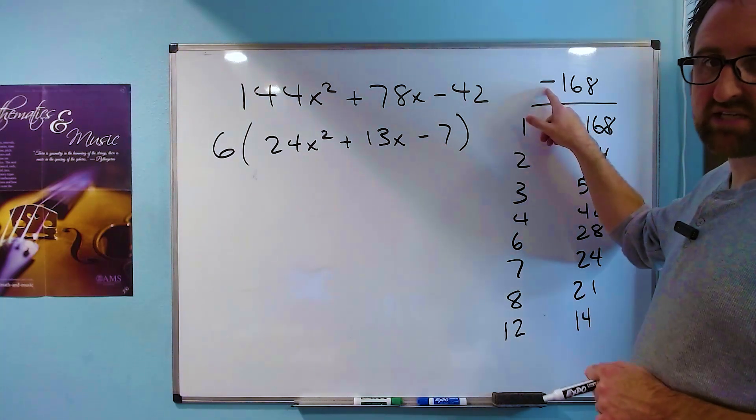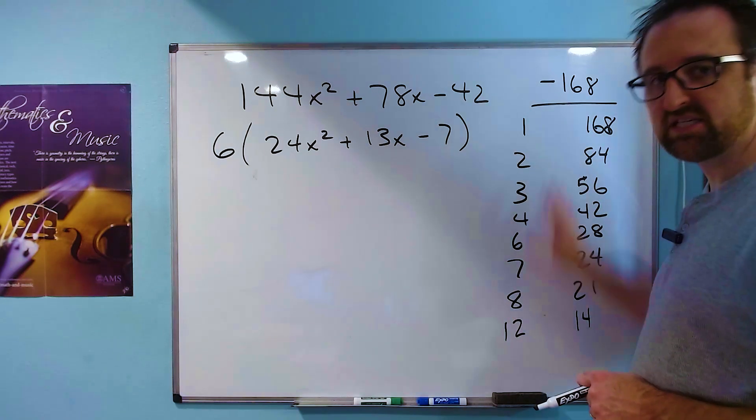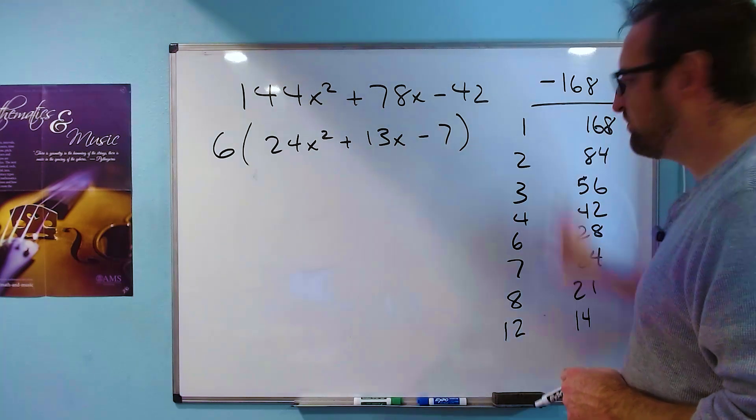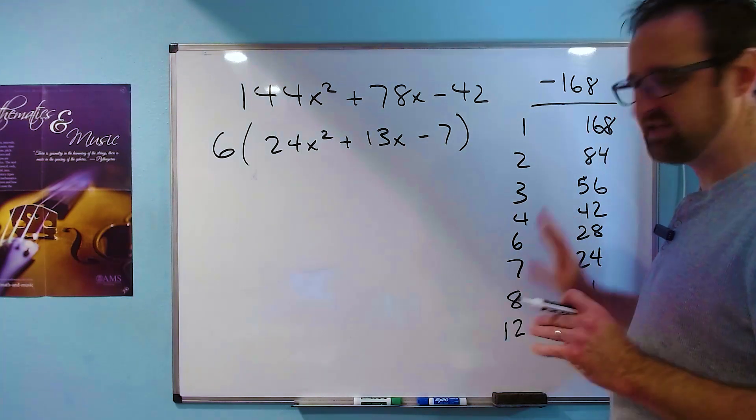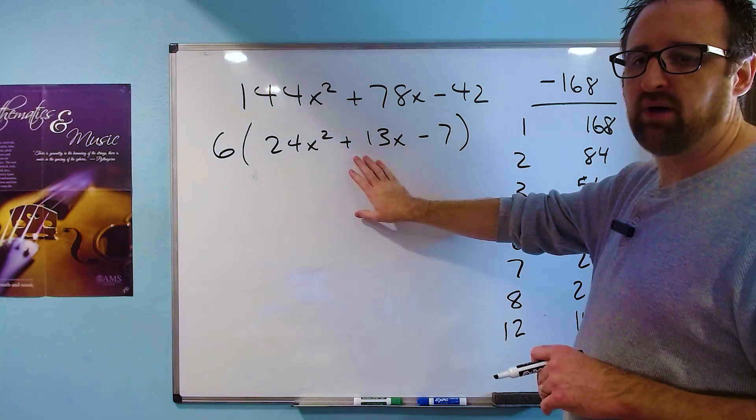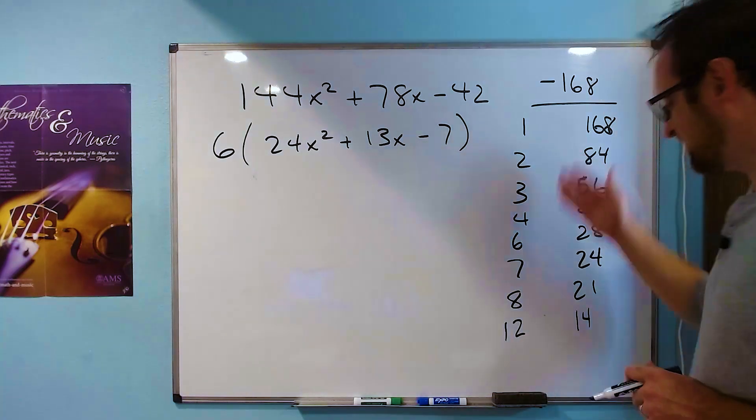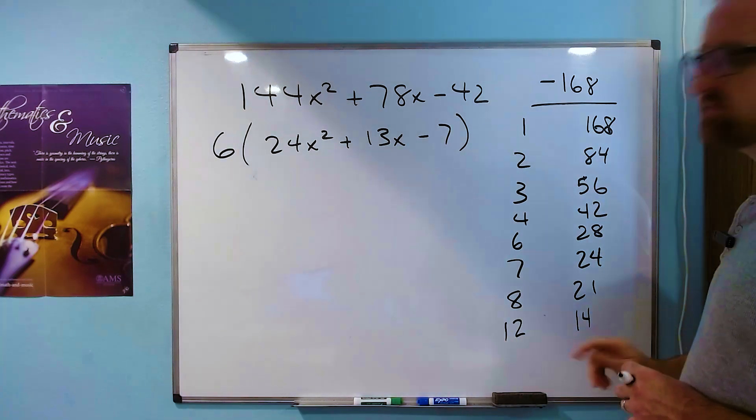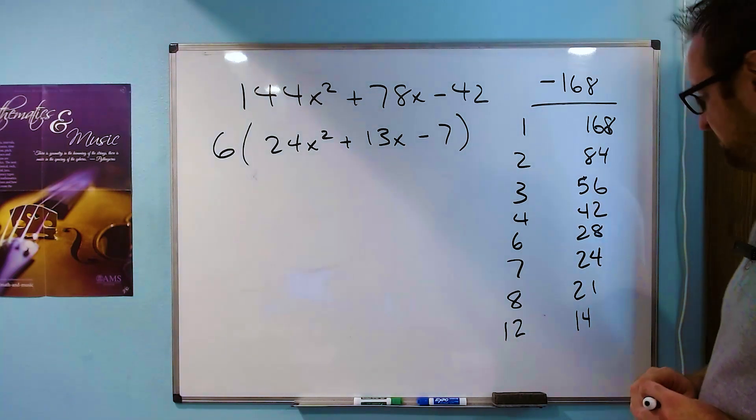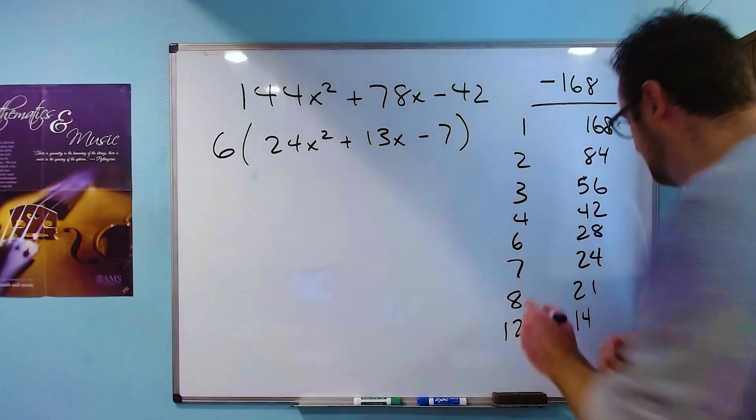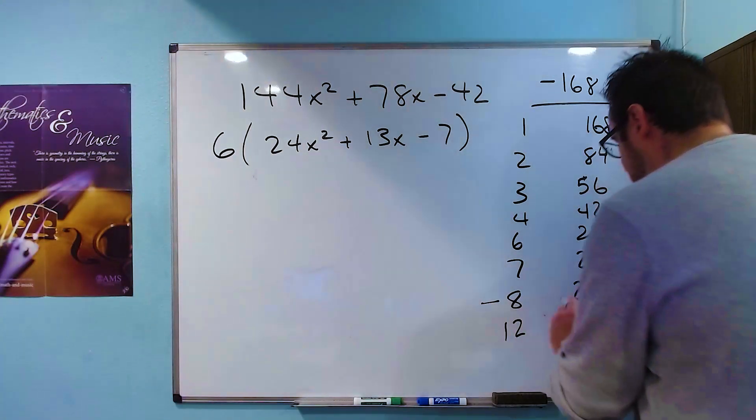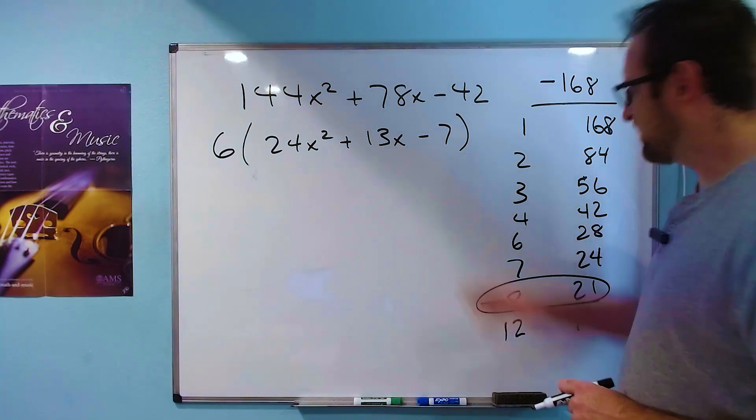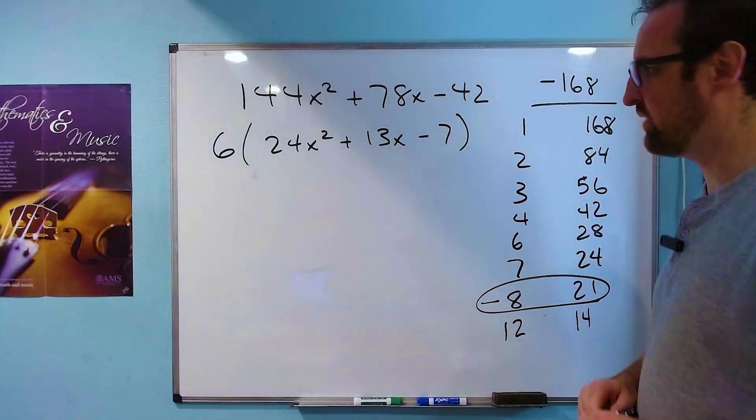Now, this is where the sign comes in again because these guys have to have opposite signs because we need them to multiply to negative 168. And we're looking for the pair of these, keeping in mind they have to have opposite signs, that add to positive 13. So take a look here and see if you can find the one that adds to positive 13 where one is positive and one is negative. If you found negative 8 and 21, you're right. That'll add up to positive 13.